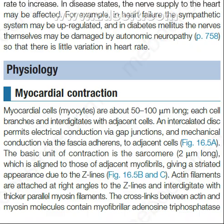The basic unit of contraction is the sarcomere, 2 micrometers long, which is aligned to those of adjacent myofibrils, giving a striated appearance due to the Z-lines. Actin filaments are attached at right angles to the Z-lines and interdigitate with thicker parallel myosin filaments. The cross-links between actin and myosin molecules contain myofibrillar adenosine triphosphatase.